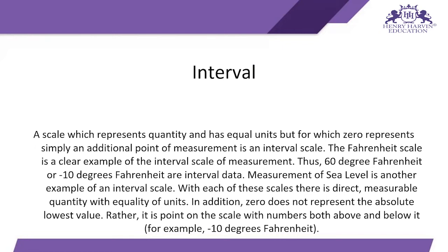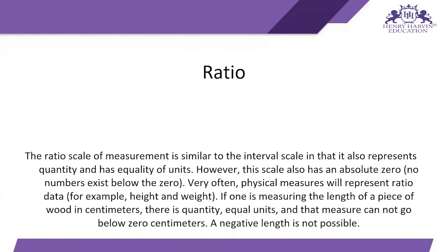Then comes the ratio scale of measurement, where zero is the absolute zero value — no measurement comes under zero. For example, the length and breadth of a rectangle cannot be less than zero, so length and breadth are outcomes under the ratio scale. Similarly, the height and weight of a person cannot be zero and cannot be less than zero — so those values are always larger than zero and fall under the ratio scale.